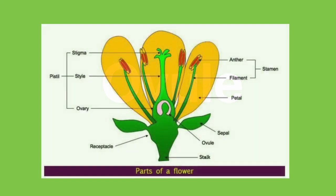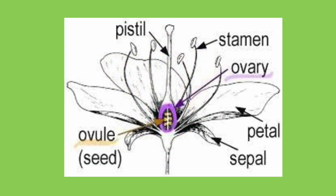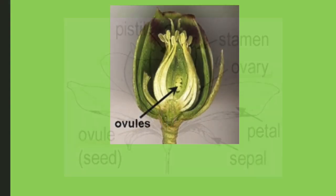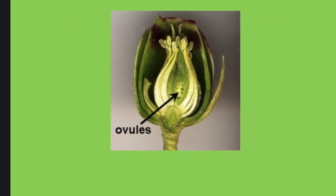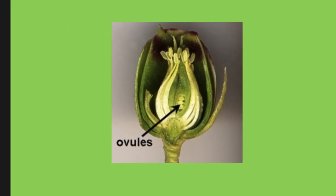What are the ovules? They're the equivalent of an egg cell in humans. The ovules are the female sex cell, also known as the female gamete, and they will go on to be fertilized and form a seed. Here you can see some real ovules.